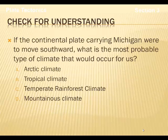If the continental plate carrying Michigan were to move southward, what is the most probable type of climate that would occur for us? Would it be A, an Arctic climate; B, a tropical climate; C, a temperate rainforest climate; or D, a mountainous climate? Please write the correct answer on the side of your notes.